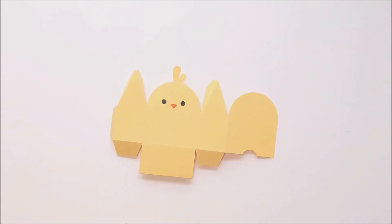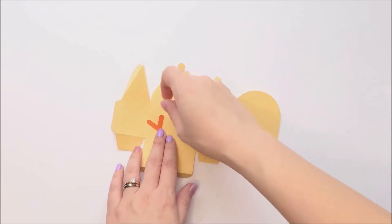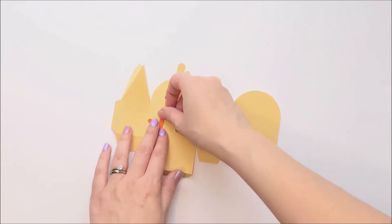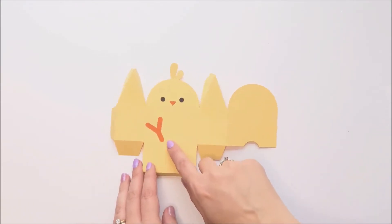Next you can glue down the feet, which can be aligned to this bottom fold edge here. And I'll usually do the feet at an angle. So just make sure you match the angle when you do the other foot.